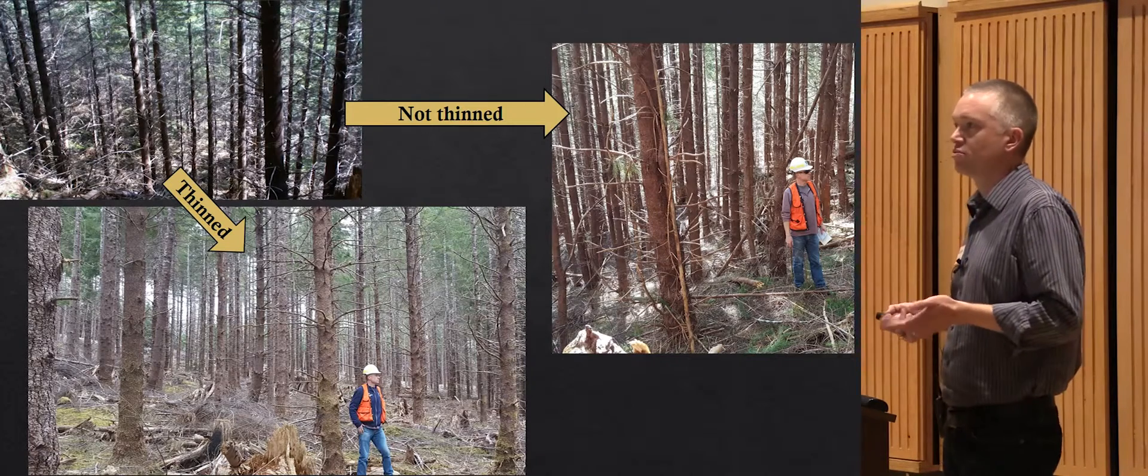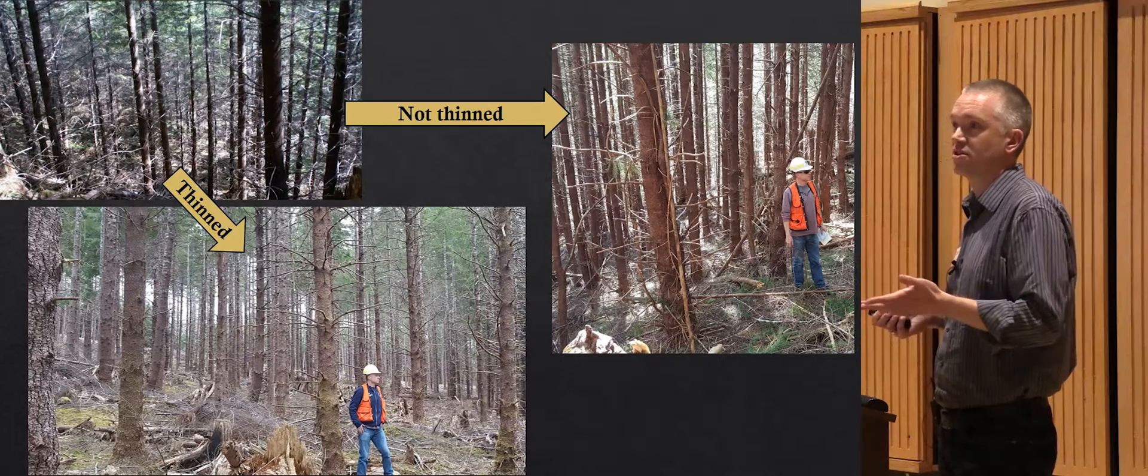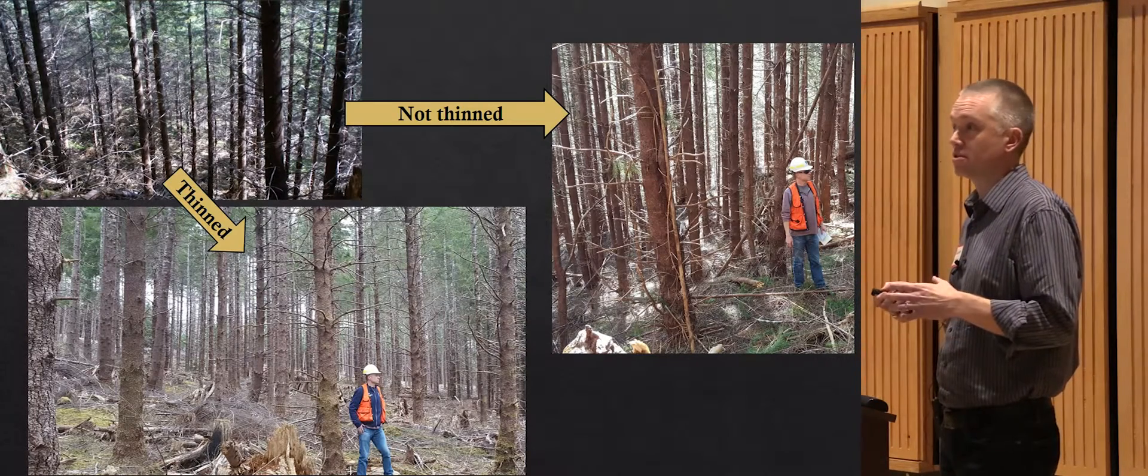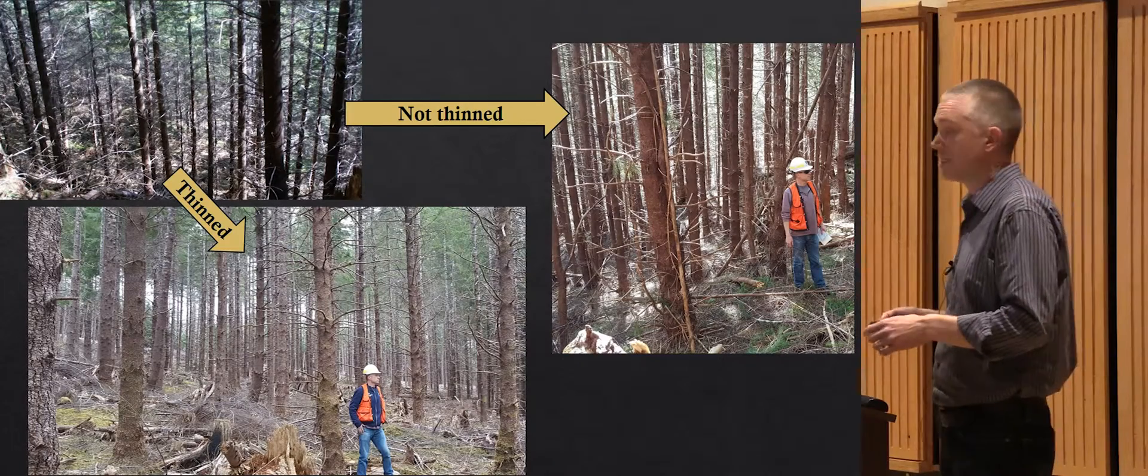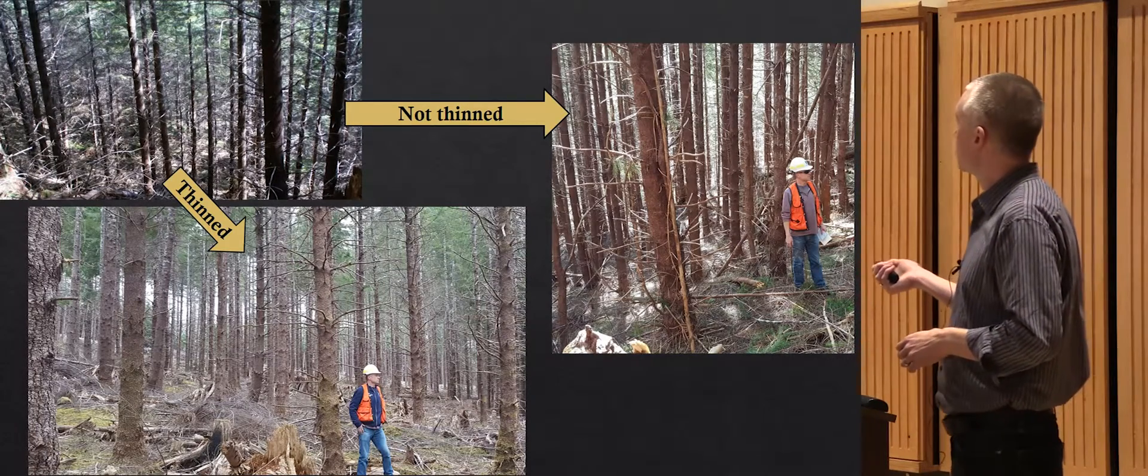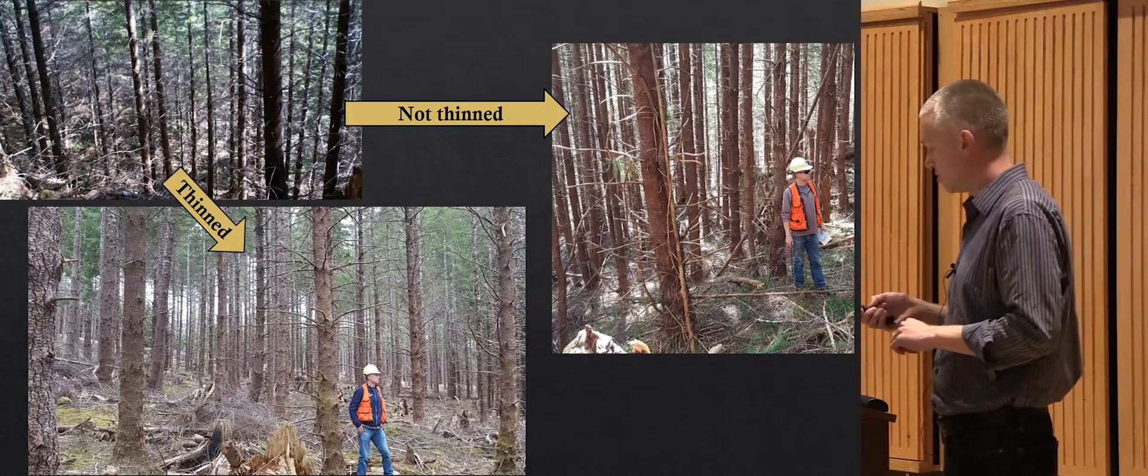I'll mention commercial and pre-commercial thinning. The distinction is pre-commercial thinning is when the trees you cut are still small enough that there's no market for them, so they're just left on the forest floor to decompose. Whereas commercial thinning, the trees are large enough to sell.